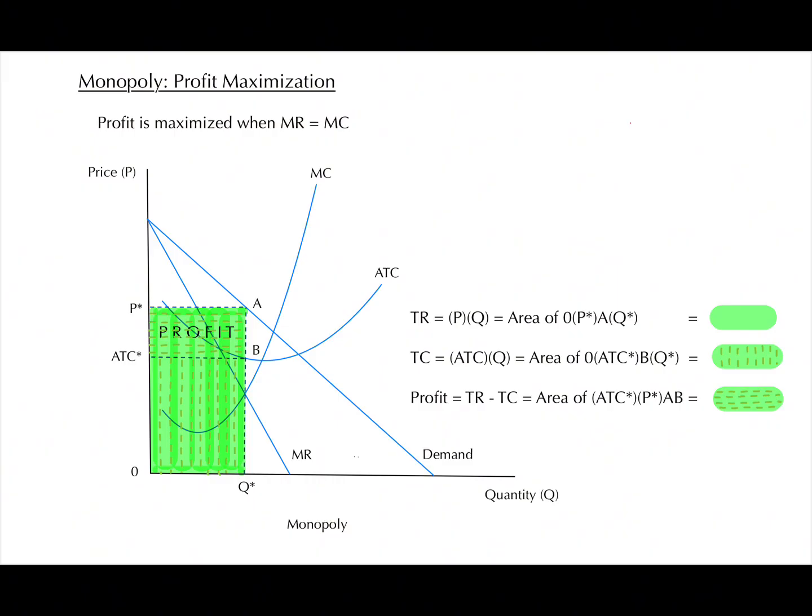Now let's look at the graph. As you can see in the graph, there are curves for the marginal cost, marginal revenue, and ATC, which is the average total cost. On the demand curve, there are price and quantity.